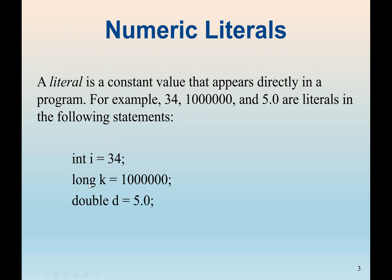Long is also a whole number, but long can take larger values than int. We also have double, which is a decimal number. When we declare a variable named b with data type double, we assign 5.0 instead of 5, because b can only take decimal values. To declare a variable, we start with the data type, then the name of the variable, and optionally we can initialize it by assigning some value.